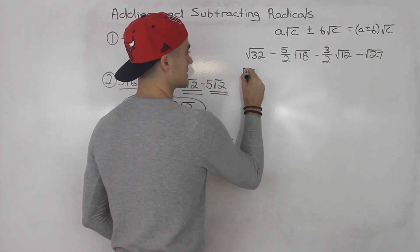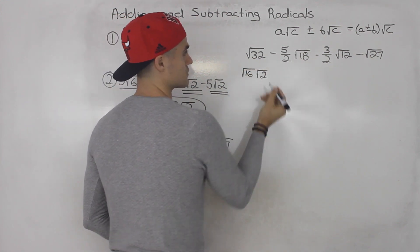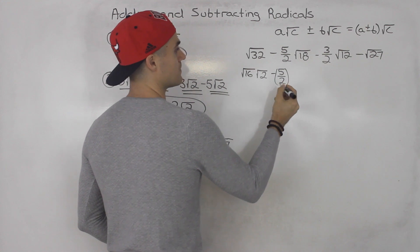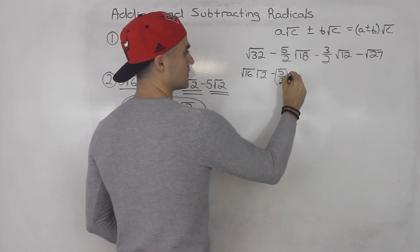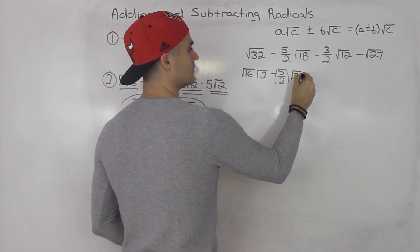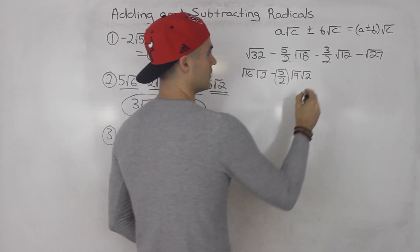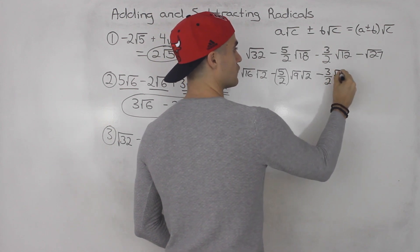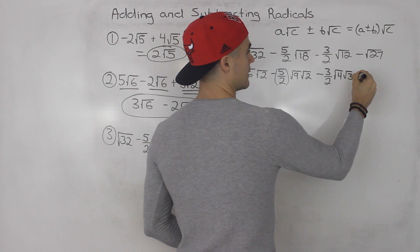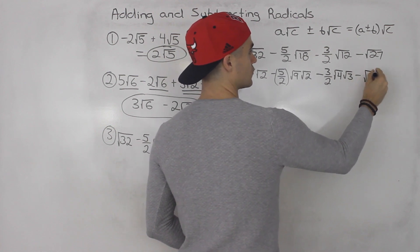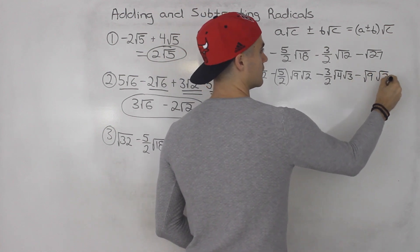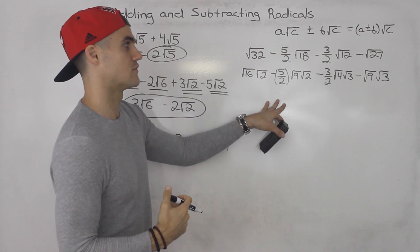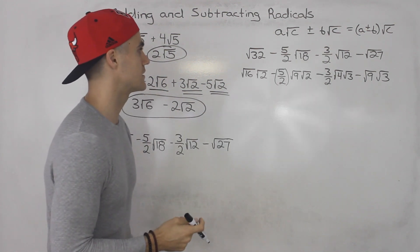Root 32 ends up being root 16 times root 2. And here, minus 5 over 2 is just a coefficient in front. Root 18 we can split up into root 9 times root 2, with minus 3 over 2 as a coefficient. Root 12 we can split up into root 4 times root 3. And root 27 we can split up into root 9 times root 3. Before adding or subtracting, you always want to simplify fully and then see if there are going to be like terms.